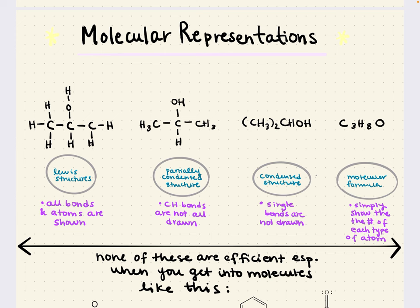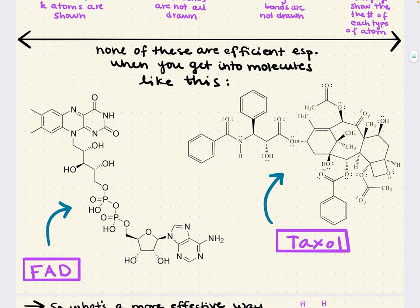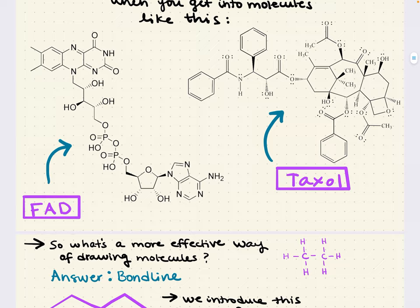None of these are as efficient or clear, especially with really big molecules — which is why we use bondline instead. For example, FAD (flavin adenine dinucleotide) is a redox-activated coenzyme associated with some proteins, and it's a massive molecule. Can you imagine drawing it in Lewis structure with every atom, every bond, and every lone pair explicitly? Taxol is another very big molecule — an anti-cancer chemotherapy drug that blocks cancer cell growth by inhibiting cell division. Drawing these explicitly would be very inefficient.